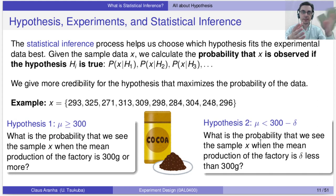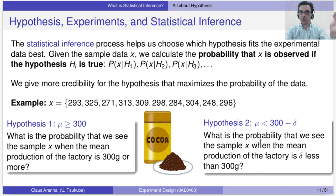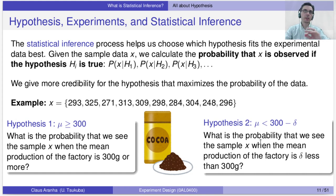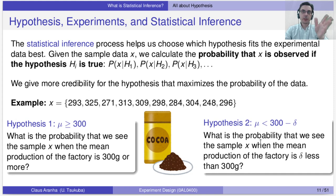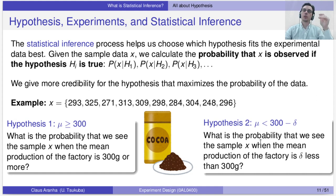Let's go back to our example. We have our data x and we focus on two hypotheses. Hypothesis 1: the mean of the population μ is above 300. Note that this is the mean of the population — the mean of the sample will be different because it always has an error. The question is: if we assume that the mean of the population is 300 or more, what is the probability that we see this sample? And then Hypothesis 2: the mean of the population μ is 300 minus delta or less. This delta defines how much we care — if it's 1 gram less we don't care, but if it's 10 grams less we do. So we define delta as the difference that matters.